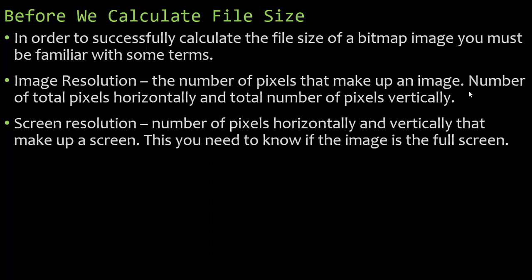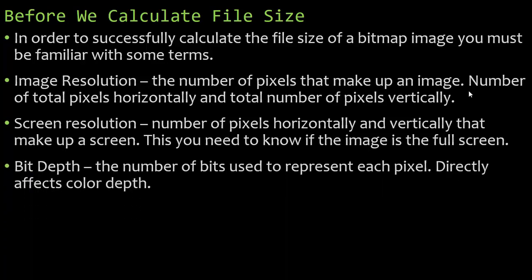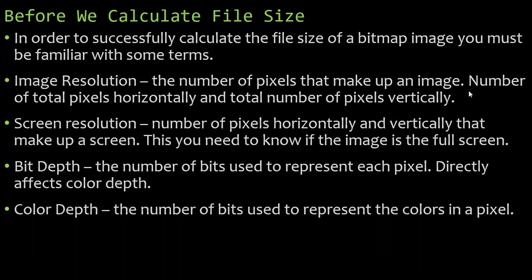You are watching this on a screen and your screen has a screen resolution. You need to know screen resolution if they tell you the image is a full screen size image. You also need to know bit depth — the number of bits used to represent each pixel — which affects color depth. Color depth is the number of bits used to represent the colors in a pixel. Don't confuse these two: bit depth is the number of bits used to represent each pixel, and color depth is the number of bits used to represent the colors in a pixel.